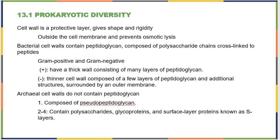The cell wall is a protective layer that gives the cell shape and rigidity, and it can also help prevent osmotic lysis. When we talk about bacterial cell walls, we focus on a chemical called peptidoglycan, composed of polysaccharide chains linked to peptides. Cell walls can be either gram positive or gram negative, referring to that peptidoglycan. Gram positive cell walls have really thick layers of peptidoglycan, while gram negative ones have fewer layers but have additional structures and an outer membrane. Archaeal cell walls do not contain any peptidoglycan.